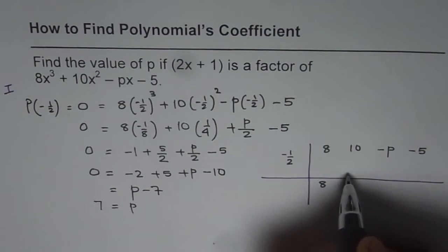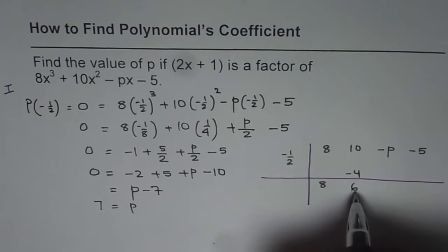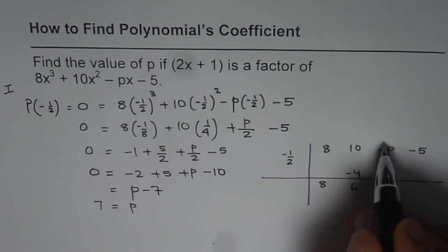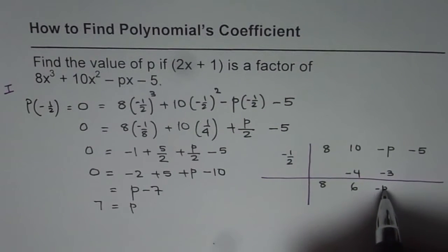So first step, bring down 8, multiply by minus half, you get minus 4. Add them up, you get 6. 6 times minus half is minus 3. Add them up, you get minus p minus 3.